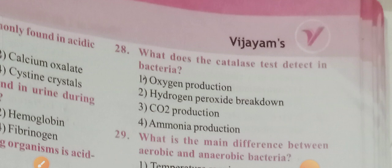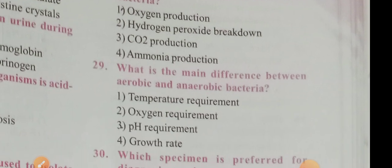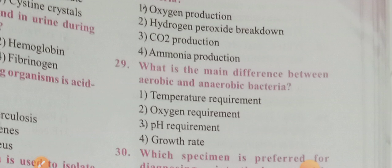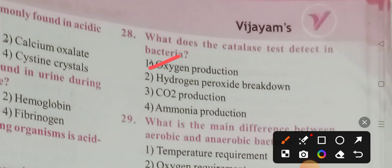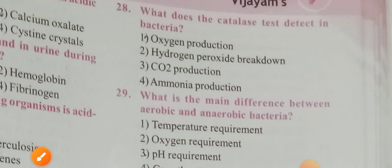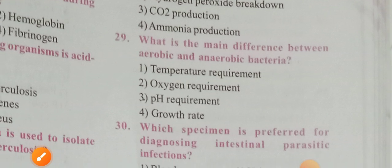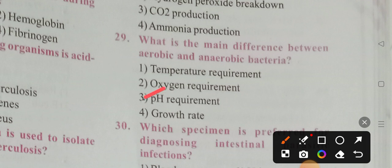What does the catalase test detect in bacteria? Options: oxygen production, hydrogen peroxide breakdown, oxygen production, ammonia production. Option 1 is the correct answer — oxygen production. What is the main difference between aerobic and anaerobic bacteria? Options: temperature requirement, oxygen requirement, pH requirement, growth rate. Option 3 is the correct answer — pH requirement.